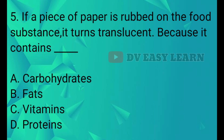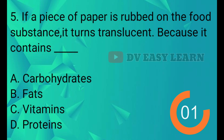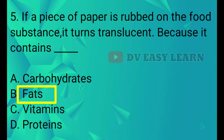Q5. If a piece of paper is rubbed on the food substance, it turns translucent because it contains what? Answer: Fats.